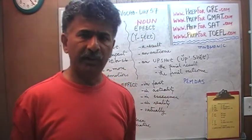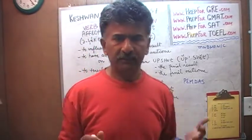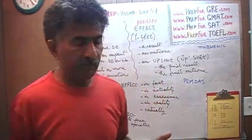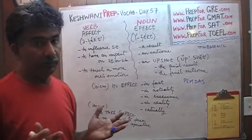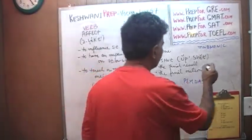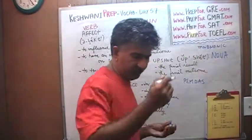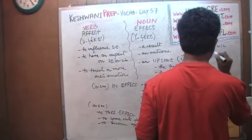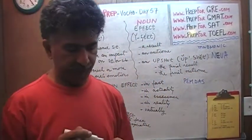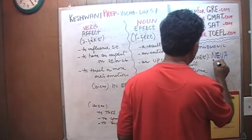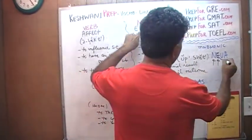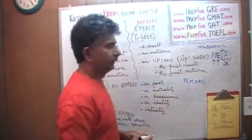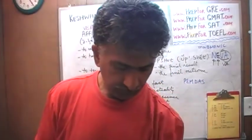Mnemonic devices are very personal — you make up your own. It may work for you just fine, but if you share it with somebody it may sound silly to them. I have a mnemonic device that helps me keep these two words separate. I first think of the word NOVA — NOVA is in space. Then I change the O to an E in my mind, and that helps me remember: noun is the effect, and the verb is affect.